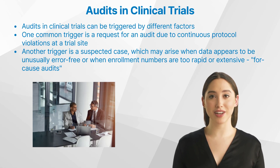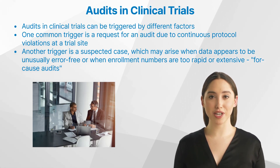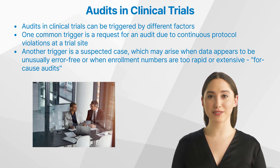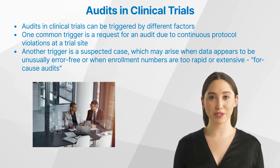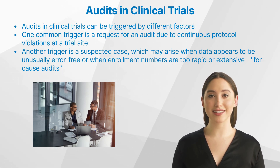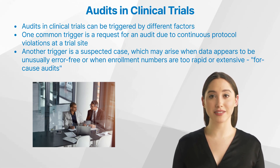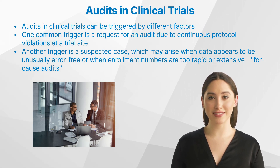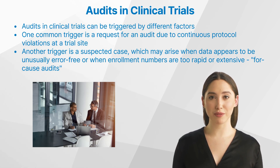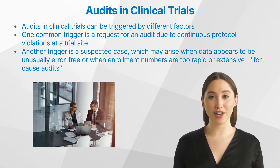Audits in clinical trials can be triggered by different factors. One common trigger is a request for an audit due to continuous protocol violations at a trial site, which can be observed by monitors. Monitors, who oversee the trial site, may request an audit when repeated hints and reminders fail to rectify the situation. Another trigger is a suspected case, which may arise when data appears to be unusually error-free or when enrollment numbers are too rapid or extensive. In such cases, audits known as for-cause audits are performed to investigate potential irregularities or fraudulent practices.